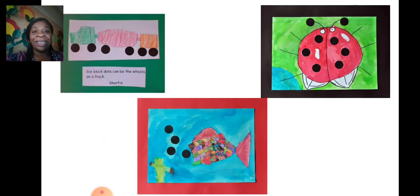These are some examples of things you could make. You can think wild and large. There's a truck made out of six black dots on the screen. There's a ladybird made out of dots as well.